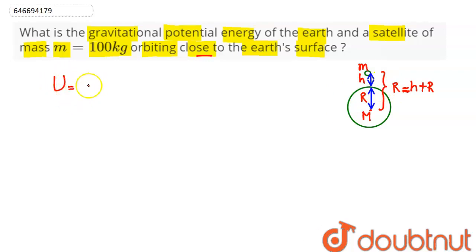The corresponding gravitational potential energy is given by the formula: U = -GMm/R.